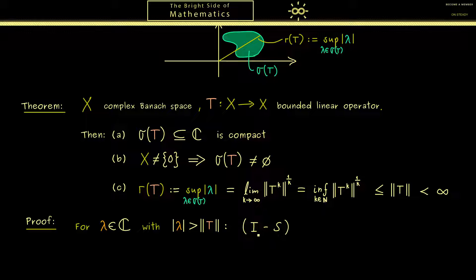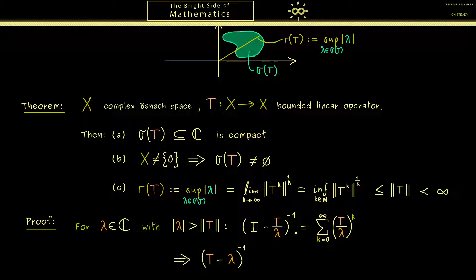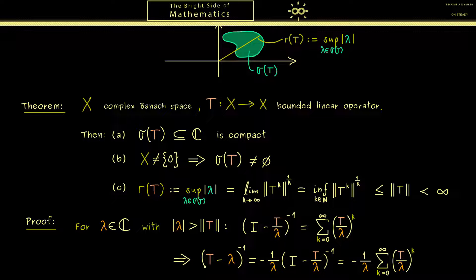It tells us that the identity operator minus an operator s is always invertible if the norm of s is less than 1. And in this case the inverse that exists is given by this infinite series. And now in our case, of course, instead of s we take T divided by lambda. By assumption this operator here has operator norm less than 1. And now you should see it's a very short way from this to T minus lambda. We just have to multiply this with minus 1 over lambda. In the end we get a very nice expression for T minus lambda inverse.